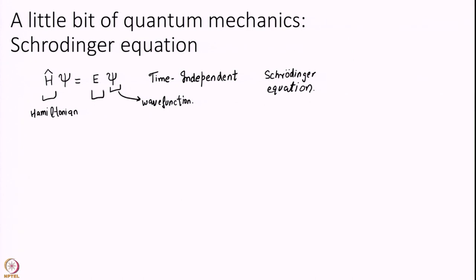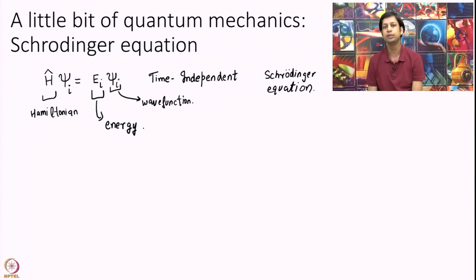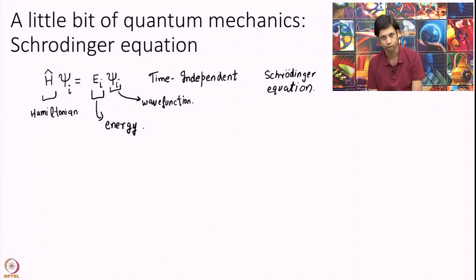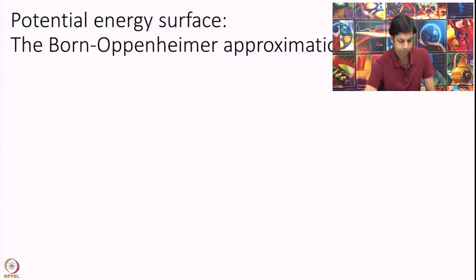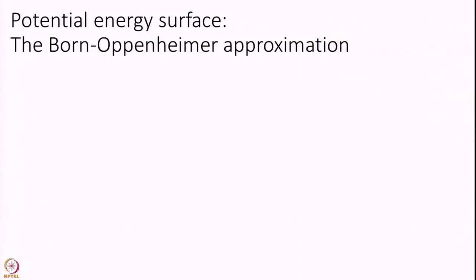What is important here is this energy term. For any given system, if I give you the Hamiltonian, there are ways of solving this time-independent Schrödinger equation, and there are actually multiple solutions labeled i. At the end of the day your system exists in these concrete energy states E_i. So where does this potential energy come from? I am leading to what is called the Born-Oppenheimer approximation.